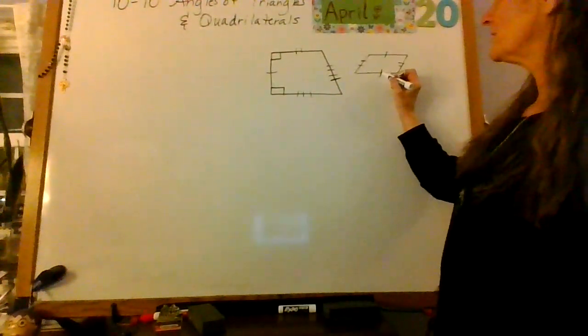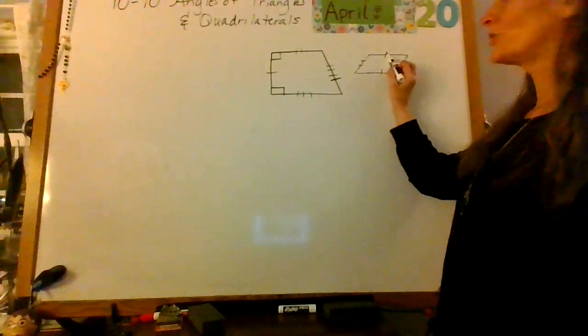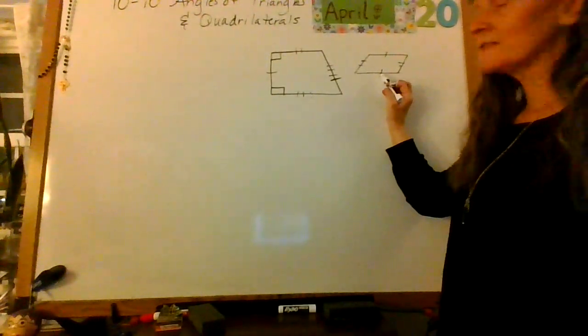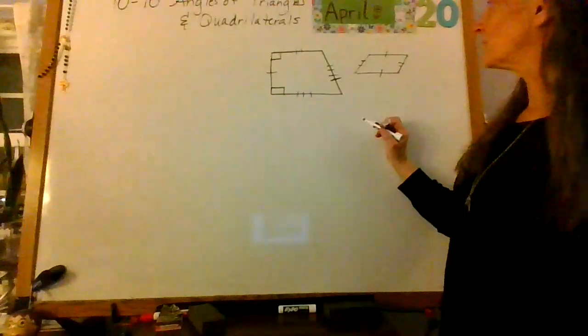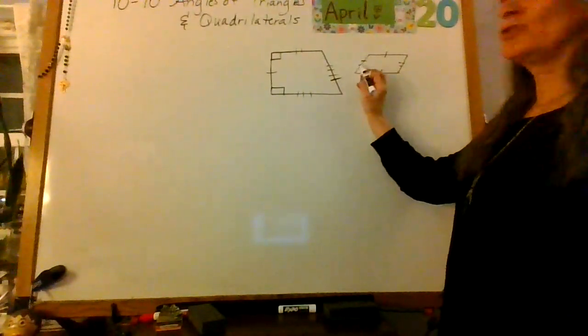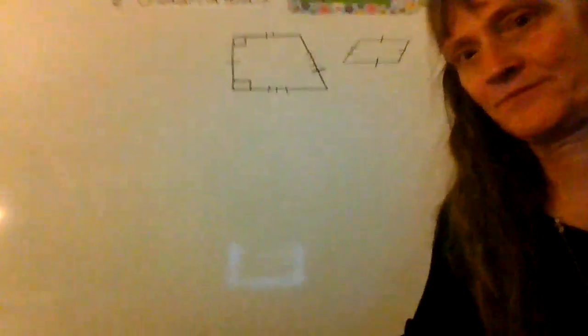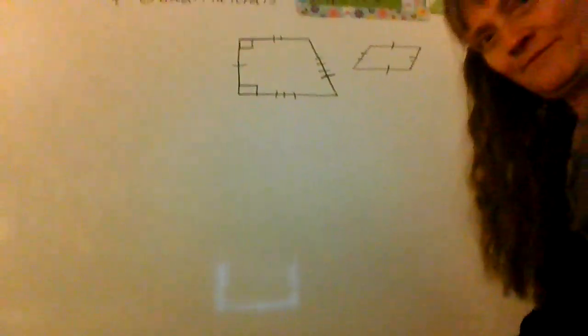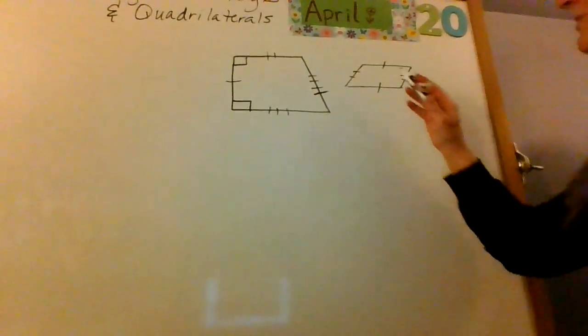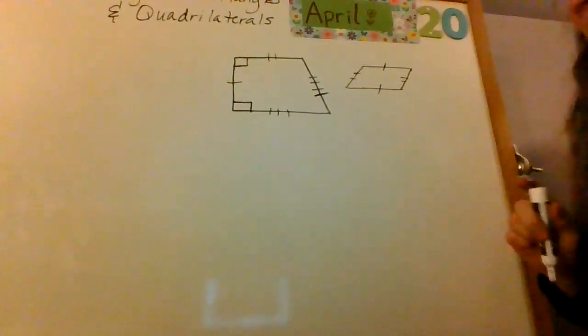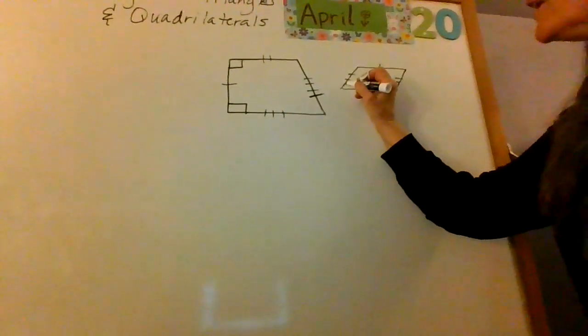Look at this parallelogram. The top and bottom, I know those are equivalent or congruent because they have one hash mark. Look at the two sides, two hash marks. Can you see that? There we go. Two hash marks and two hash marks, that means those are the same.